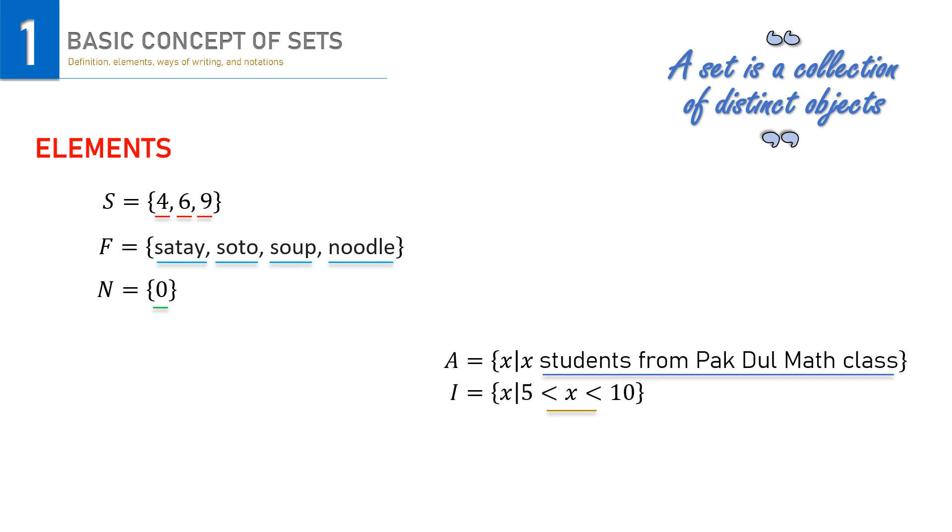When a set has no element, we call it a null or empty set. It is expressed like this. But be careful, the null set is not the same with the zero set or a set that contains zero as its only element, as in our set N above.